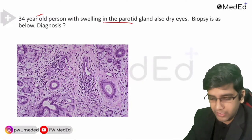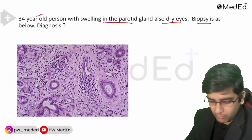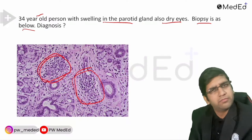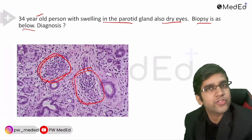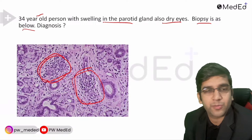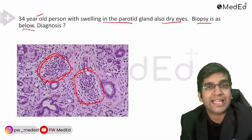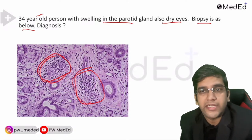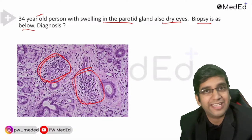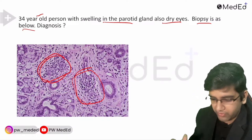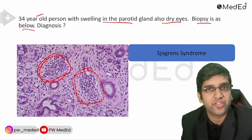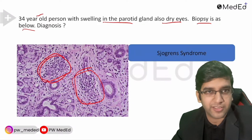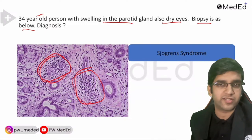34-year-old, swelling in the parotid gland, also has dry eyes. Biopsy shows small round blue cells (lymphocytes) — classic lymphocytic infiltration of salivary gland. Lymphocytes are classically seen in autoimmune conditions, as seen with Graves' and Hashimoto's. Having an autoimmune condition affecting the salivary gland with dry eyes — diagnosis: Sjögren's syndrome. You can diagnose Sjögren's syndrome on a biopsy simply by correlating the lymphocytes with the clinical history.